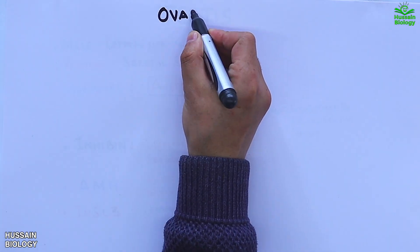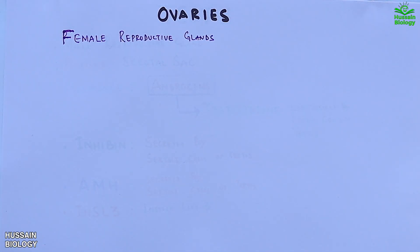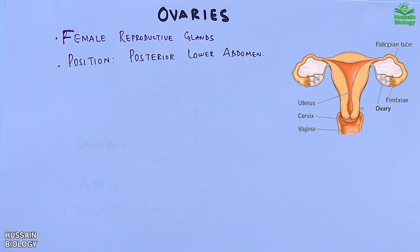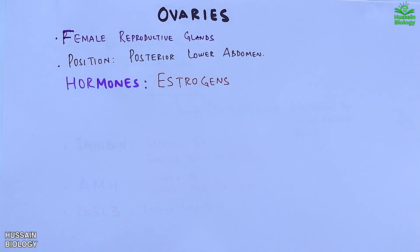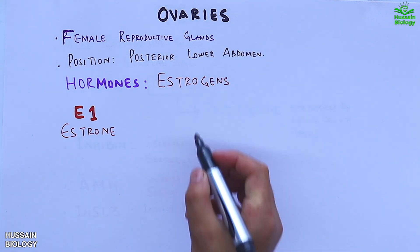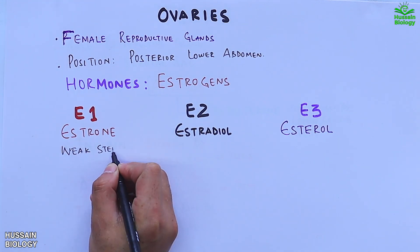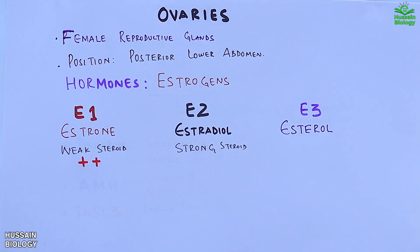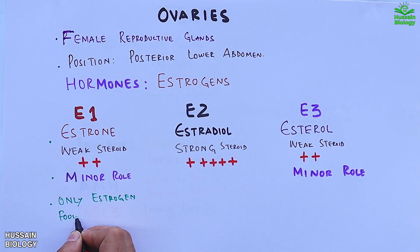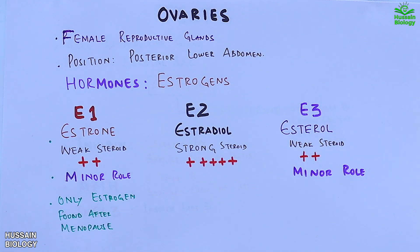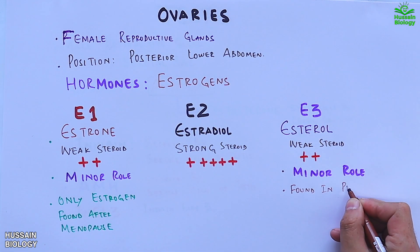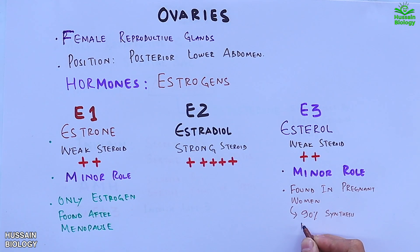Now let's move to the ovaries, the female reproductive gland, positioned in the posterior lower abdomen as shown in the diagram. From the ovaries we get estrogens, of which there are three types: E1 (estrone), E2 (estradiol), and E3 (estriol). Estrone (E1) is a weak estrogen, estradiol (E2) is a strong estrogen, and estriol (E3) is also weak like E1. Estrone is the only estrogen found after menopause.